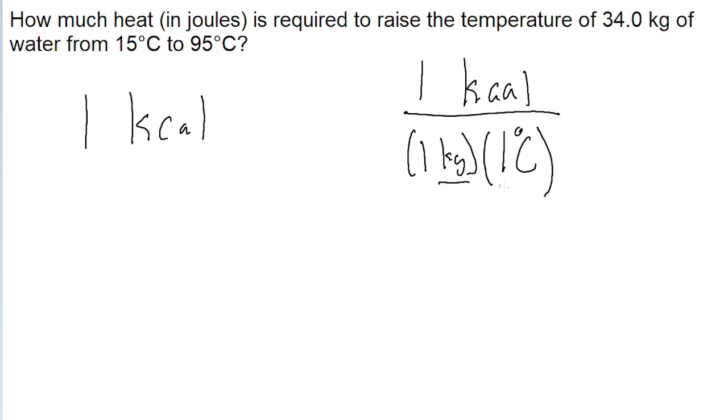So we have kilograms and degrees celsius in the denominator, so that means when we do our multiplication with this unit conversion then we're going to put mass and temperature in the numerator. So that is 34 kilograms multiplied by the temperature difference, so 95 degrees celsius minus 15 degrees celsius multiplied by our little unit conversion.